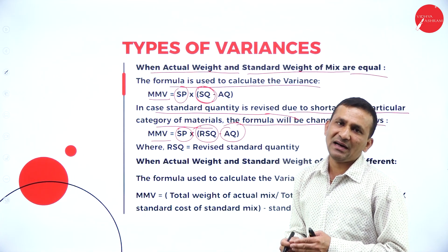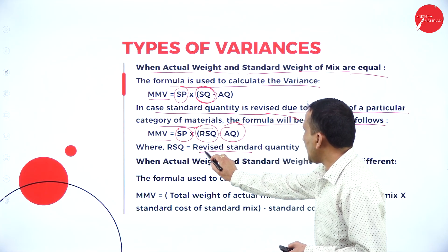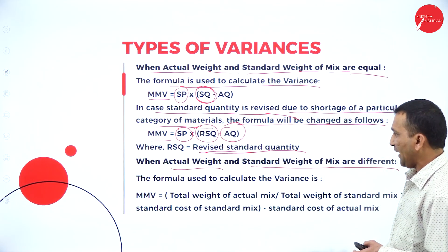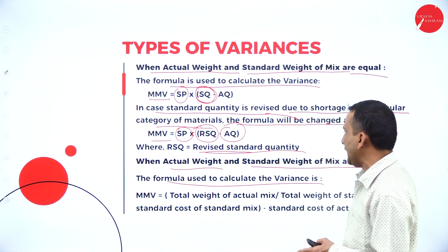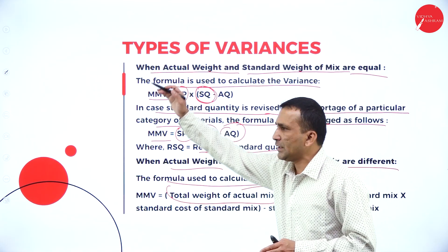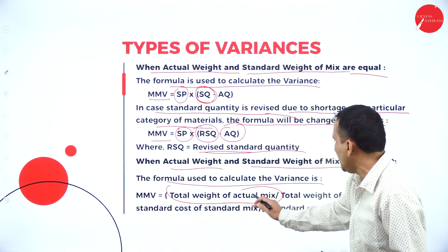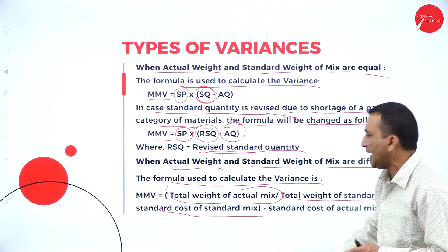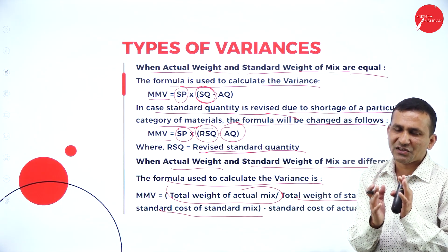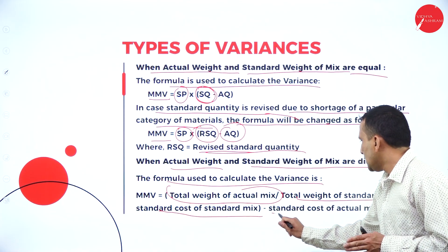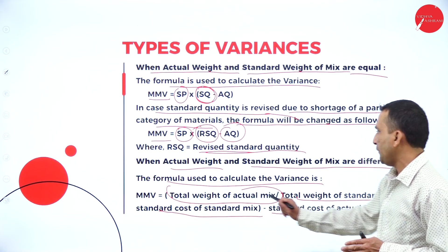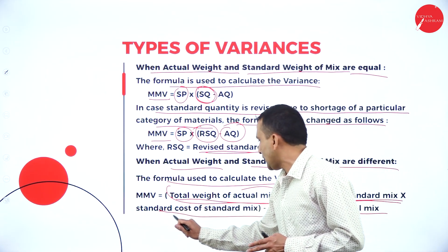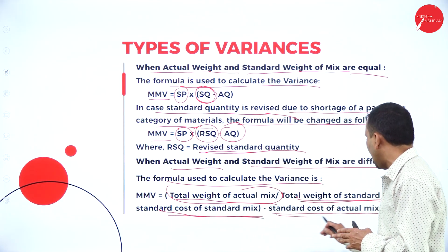How to calculate the Revised Standard Quantity: Revised Standard Quantity = (Total Weight of Actual Mix ÷ Total Weight of Standard Mix) × Standard Quantity. The alternative formula when actual weight and standard weight of the mix are different: MMV = (Total Weight of Actual Mix ÷ Total Weight of Standard Mix) × Standard Cost of Standard Mix − Standard Cost of Actual Mix.